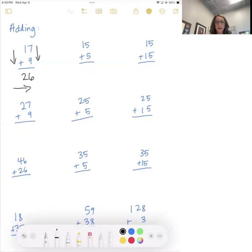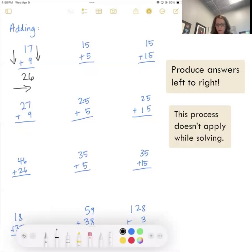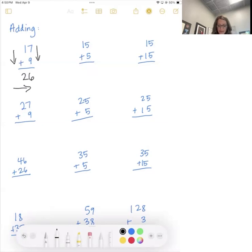So next one, 27 plus nine, seven and nine is 16. I'm going to remember that six again. I'm going to add my carry and write 36.